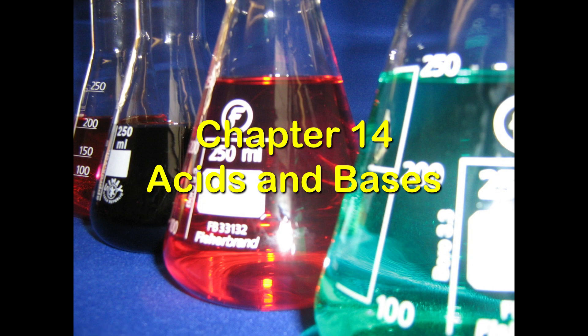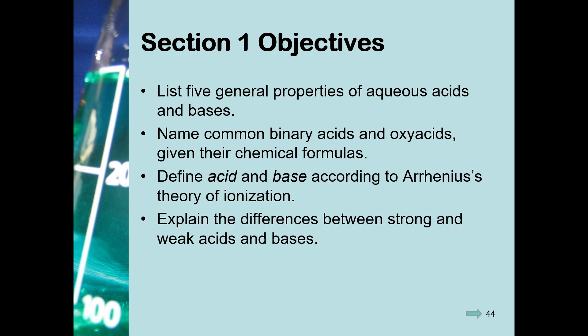Chapter 14: Acids and Bases. In this section we're going to list five general properties of aqueous acids and bases, name the common binary acids and oxyacids and give their chemical formulas, define acids and bases according to Arrhenius' theory of ionization, and explain the difference between a strong and a weak acid and base.